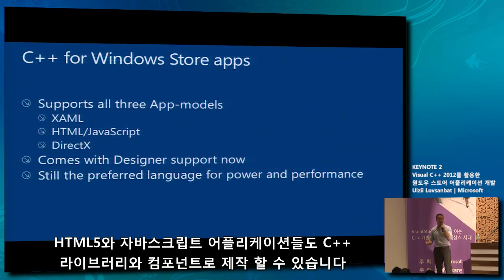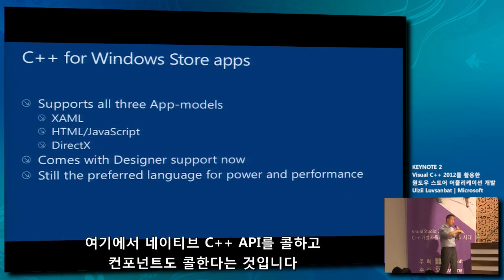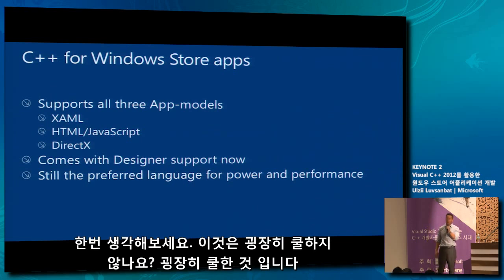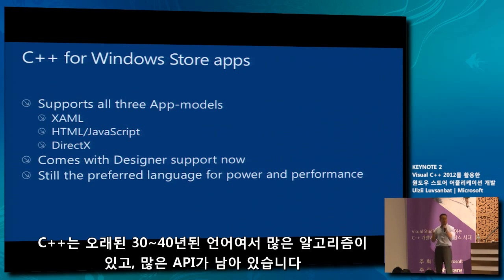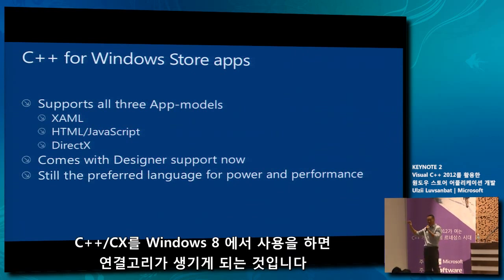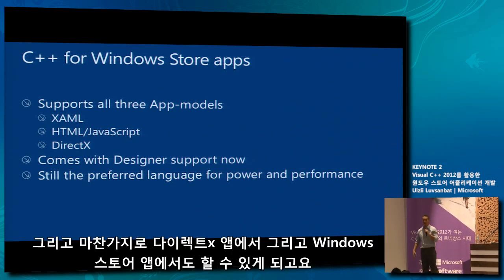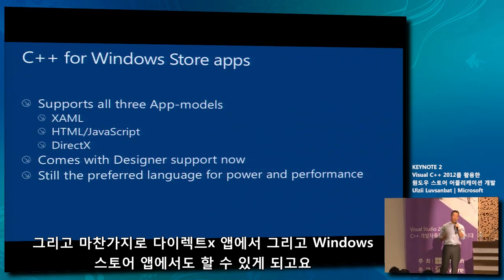Also, HTML5 and JavaScript applications can call into native C++ libraries and components. Think about that — HTML5 applications running in a browser calling into native C++ APIs. That's very cool. C++ is over 34 years old, so there are many algorithms and APIs available in C++, but they couldn't all be used in modern technologies. Using C++ CX on Windows 8, it creates that bridge connecting the old world to the new world. And as usual, DirectX is available on desktop applications as well as in the Windows Store.